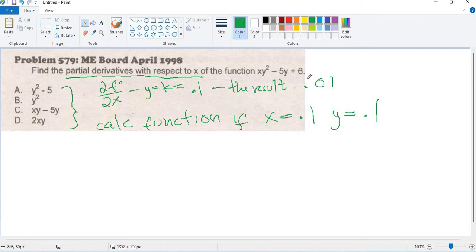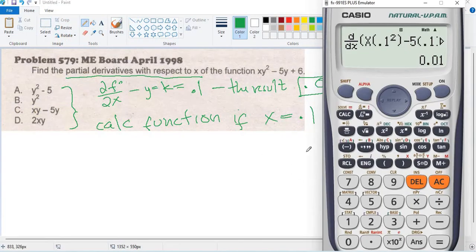We're looking for the result of 0.01 to verify the option is correct. The answer here is letter B. 0.1 squared equals 0.01.